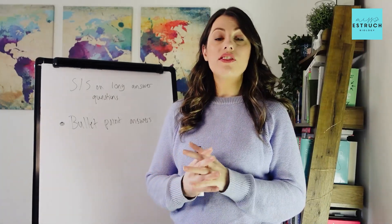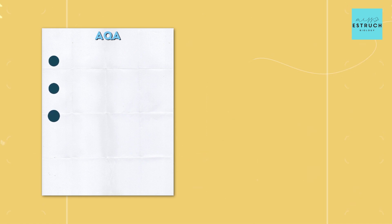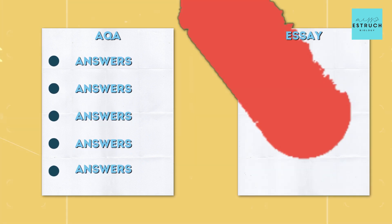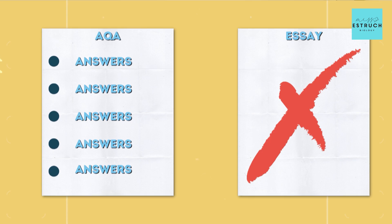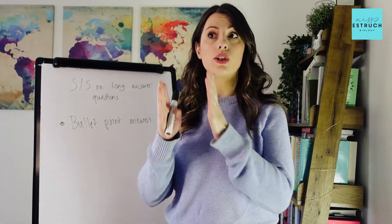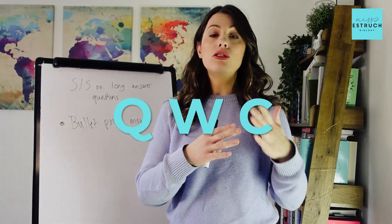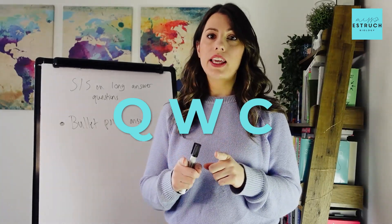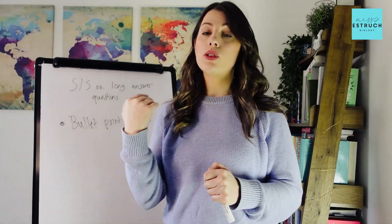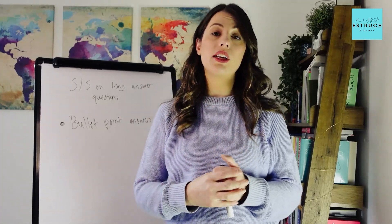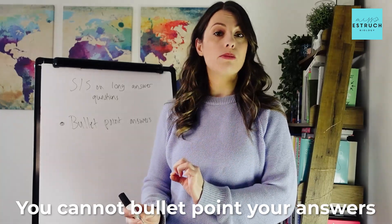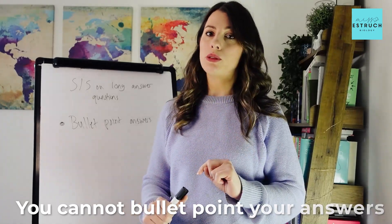Just linked to that: for AQA you can bullet point your answer for every single question except for the essay. For other exam boards you do get marked on your quality of written communication, or QWC, so you need to double check with your specification — on the long answer questions does it say QWC or quality of written communication is being assessed? Because if it does, you cannot bullet point your answers.